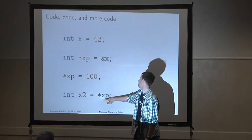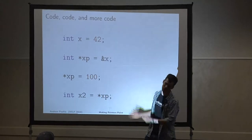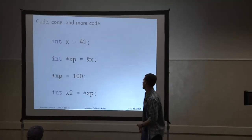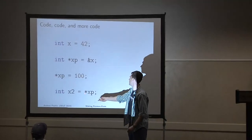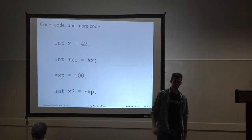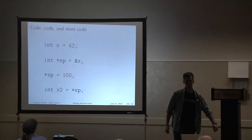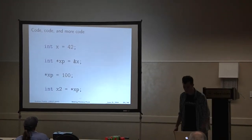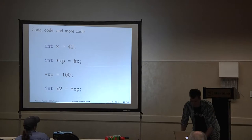You can also dereference the values of pointers and store them directly. You can say int x2 equals the dereference value of xp — the dereference operator being the asterisk.